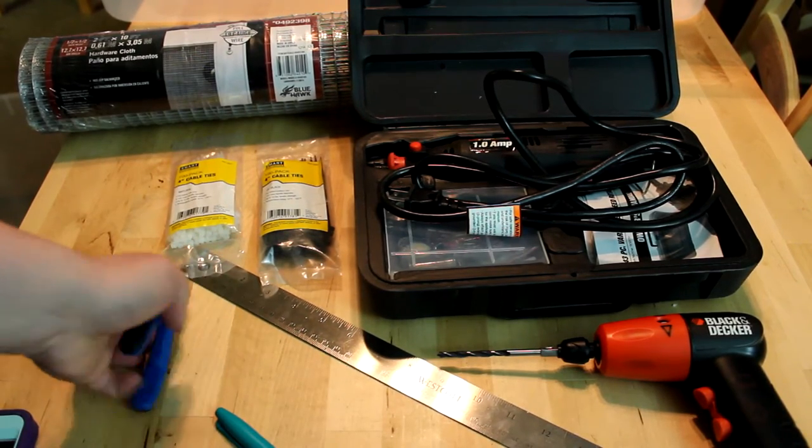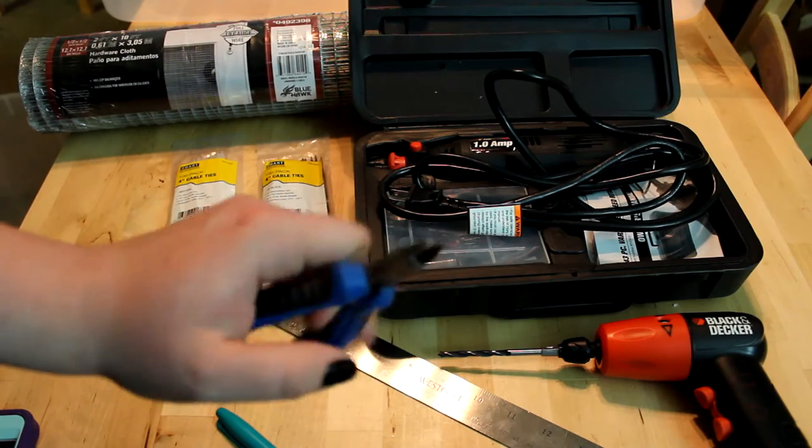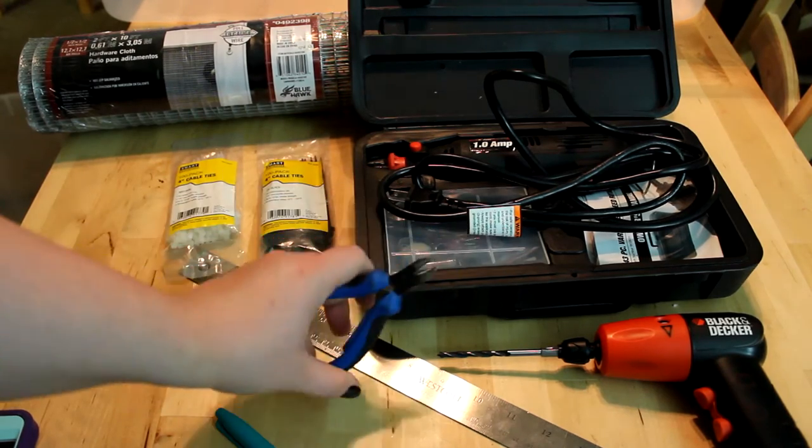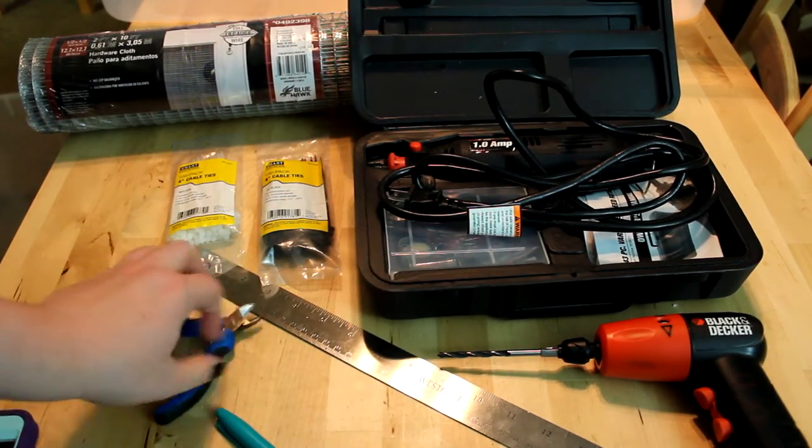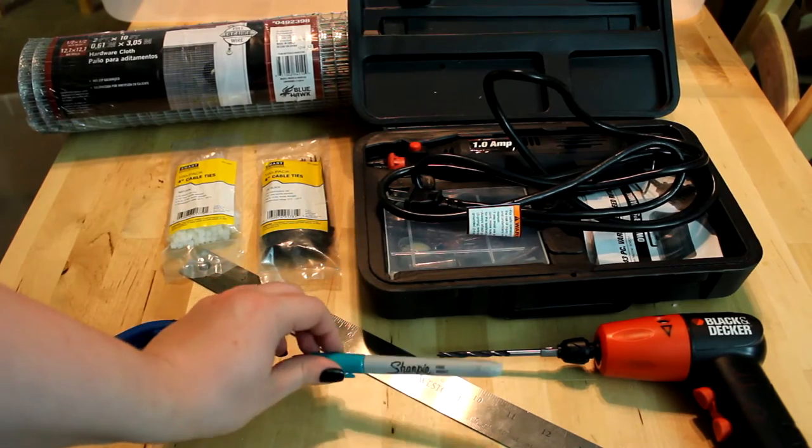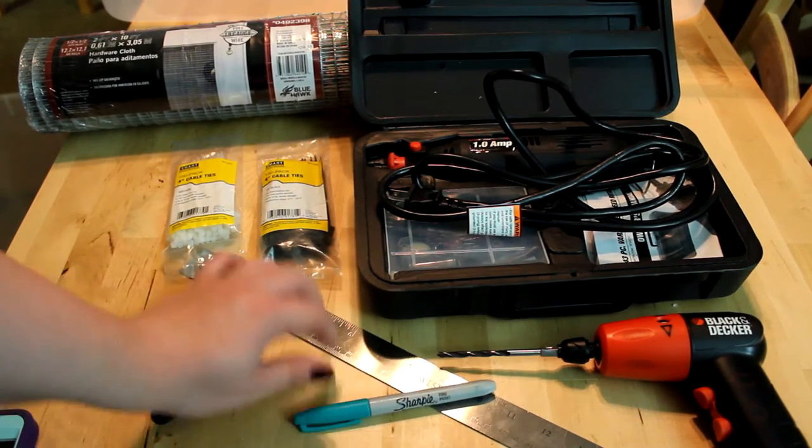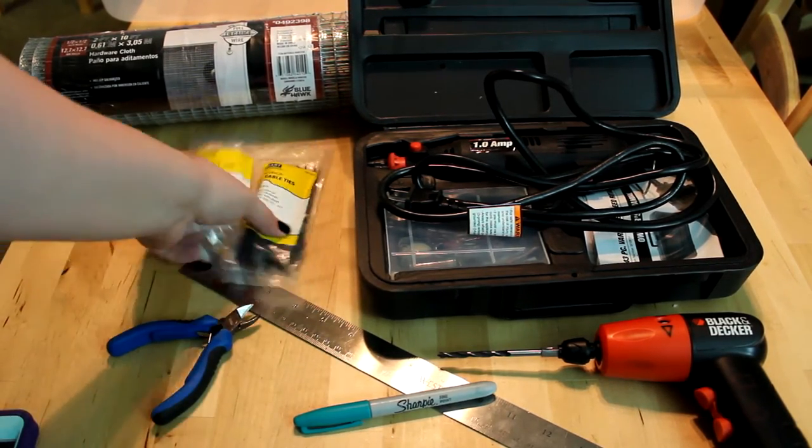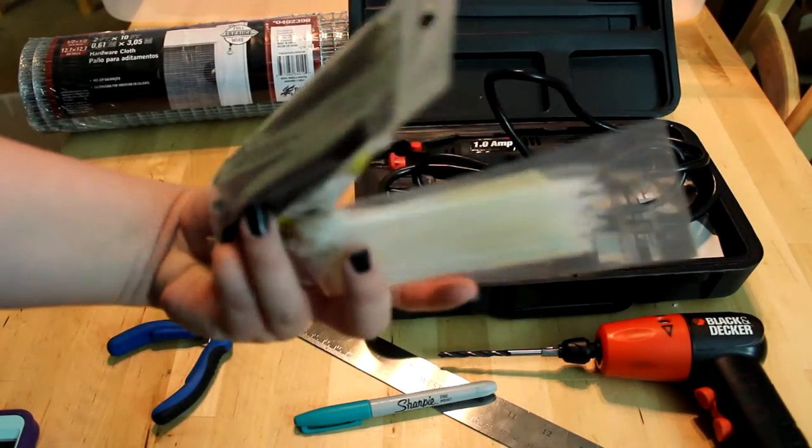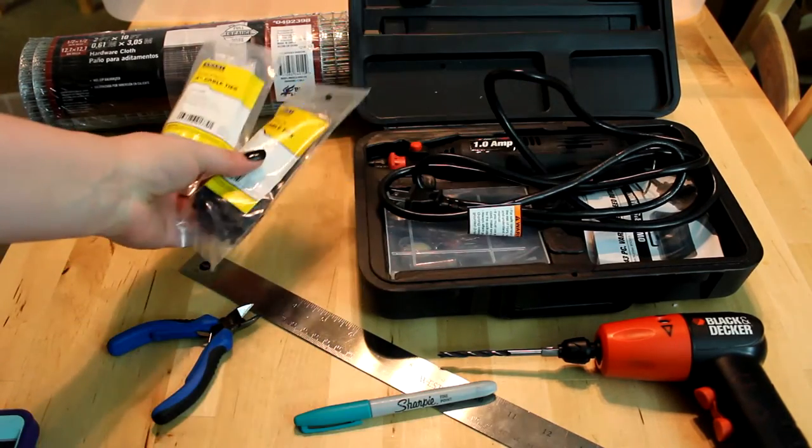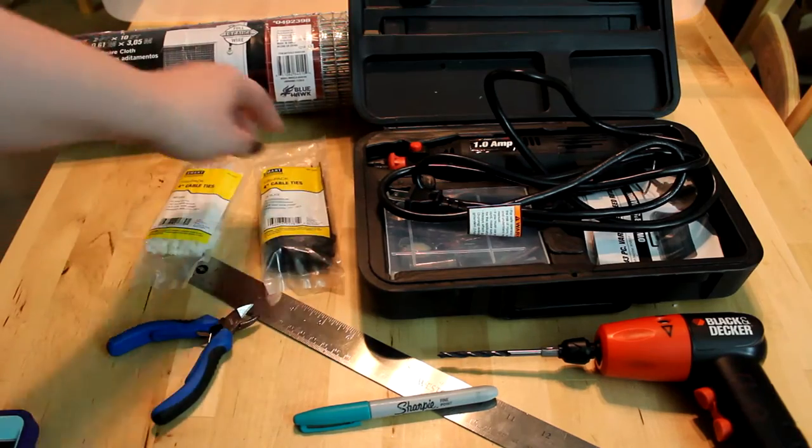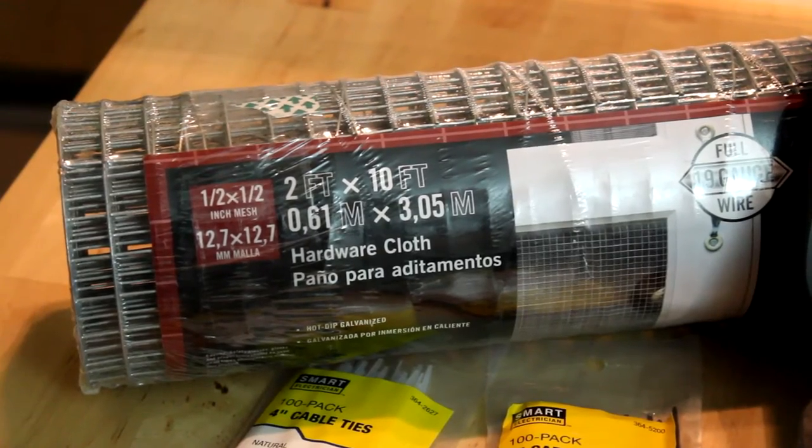These are wire cutters. They're actually small ones. If you prefer bigger ones, get bigger ones. There's a Sharpie to mark off everything I'm measuring. Zip ties. I have both white and black because I haven't decided on what color I'm using yet.